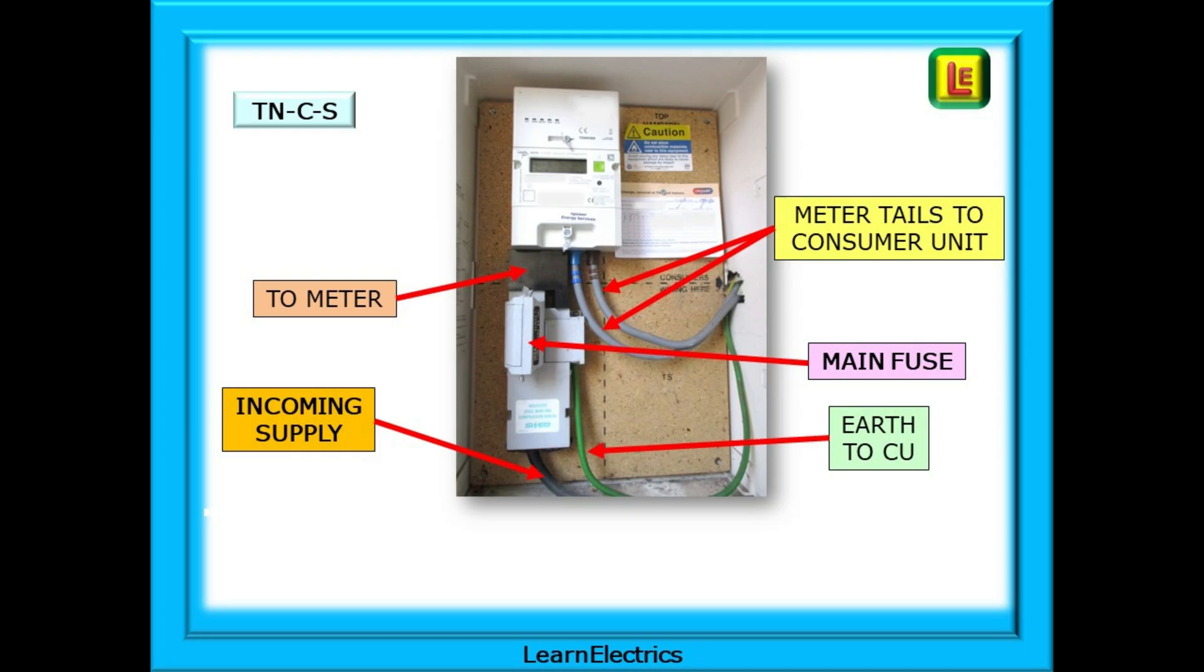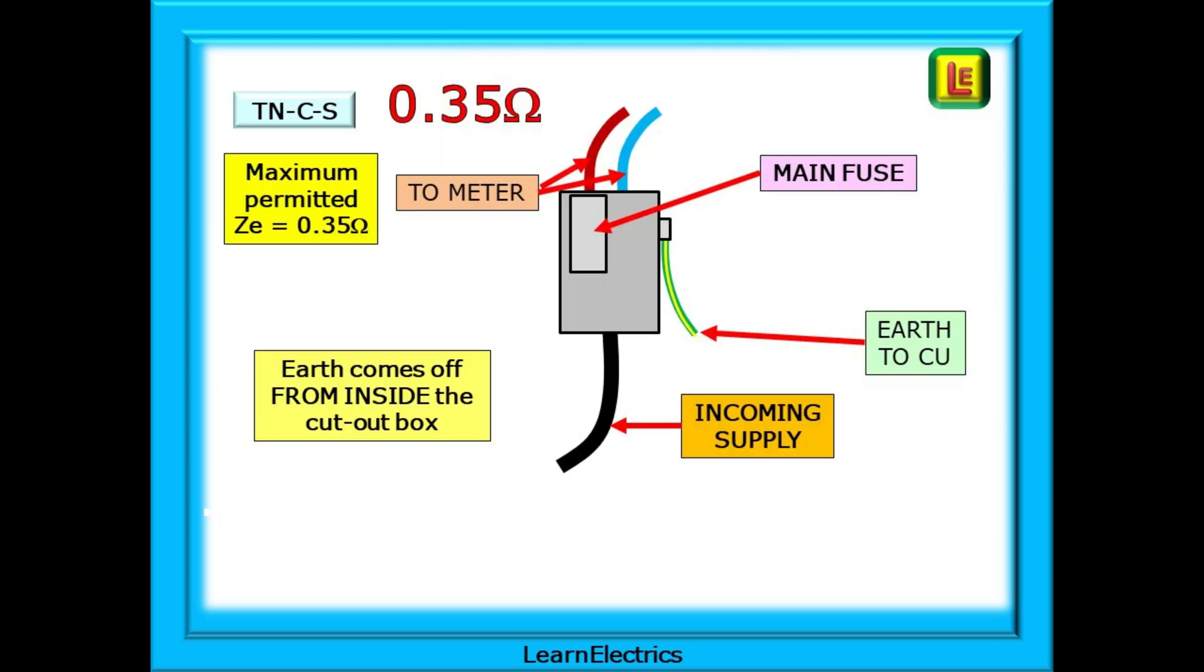This is ZE, a measurement of the outside world from the consumer unit back to the transformer. It is often easier to visualise the earthing systems when shown as simple drawings. This is the TNCS system from the previous slide.